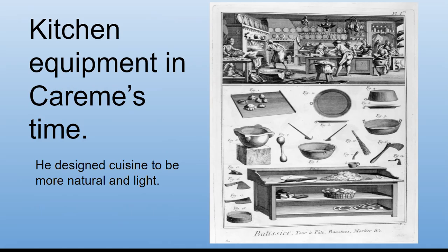Kitchen equipment in Carême's time looked quite different — a sketch from one of his books shows different workers making different things in the kitchen. He designed his cuisine to be more light, fresh, and natural than what came before, which had been heavy and loaded with spices.